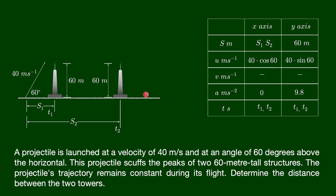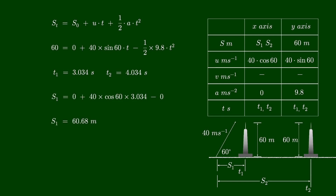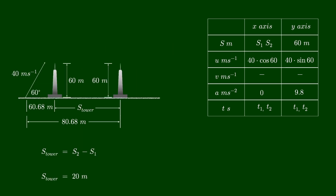We will first determine the time required to reach a height of 60 meters. We can determine the horizontal displacement of the projectile using this duration. Finally, we can calculate the distance between the two towers by subtracting the two displacements. This kinematic equation can be used to calculate the time required to cover a distance of 60 meters. This is a second order equation, so we should obtain two values for time. These two points in time correlate to the projectile's displacement as it ascends and descends. The horizontal range corresponding to these two instances in time must then be calculated using the same kinematic equation. Using these two displacement figures, we have the means to compute the distance separating the two towers, as indicated on the screen.